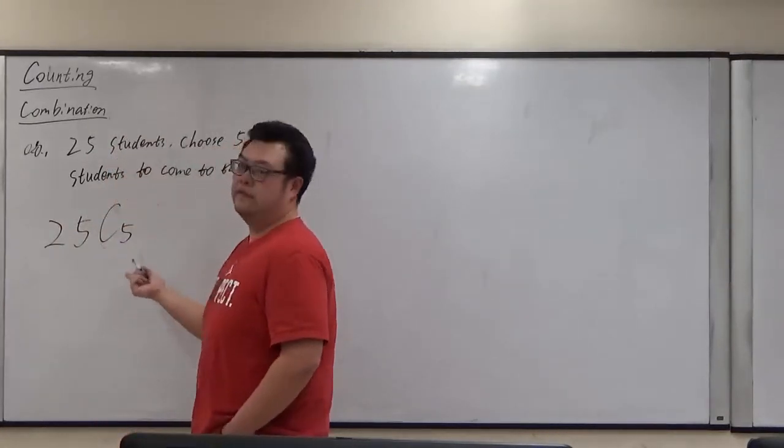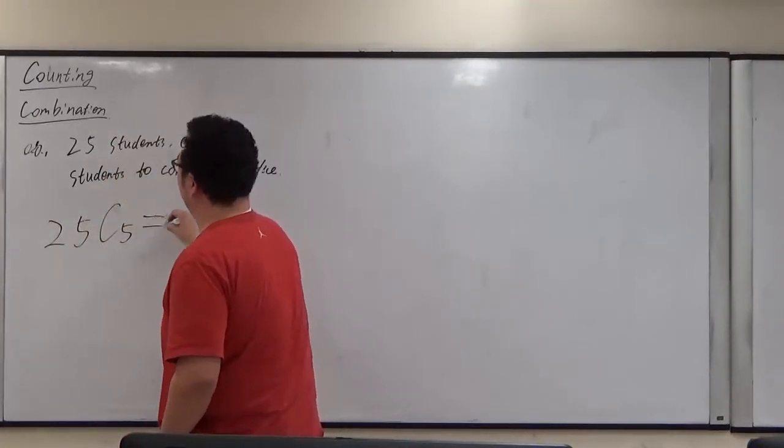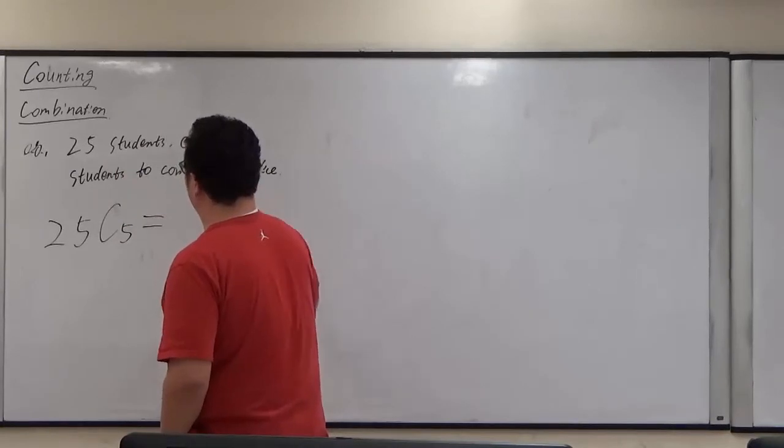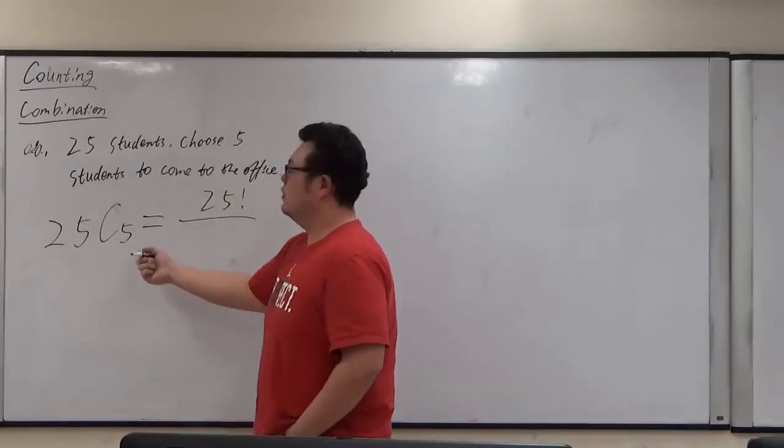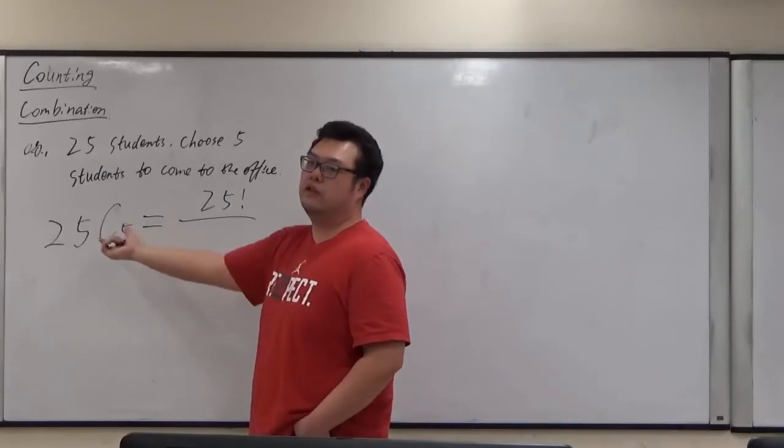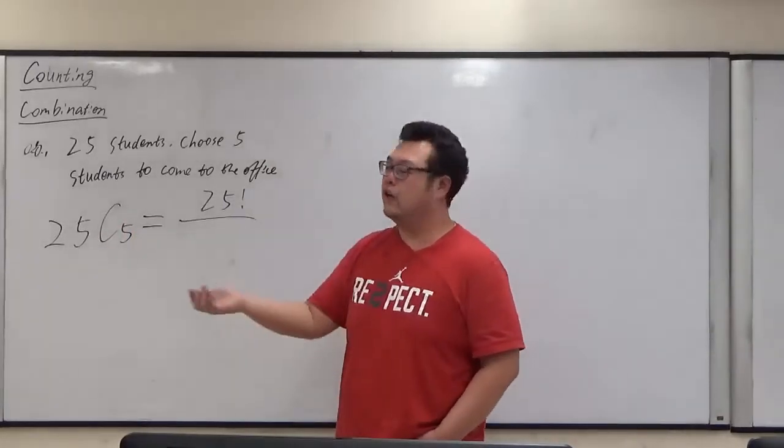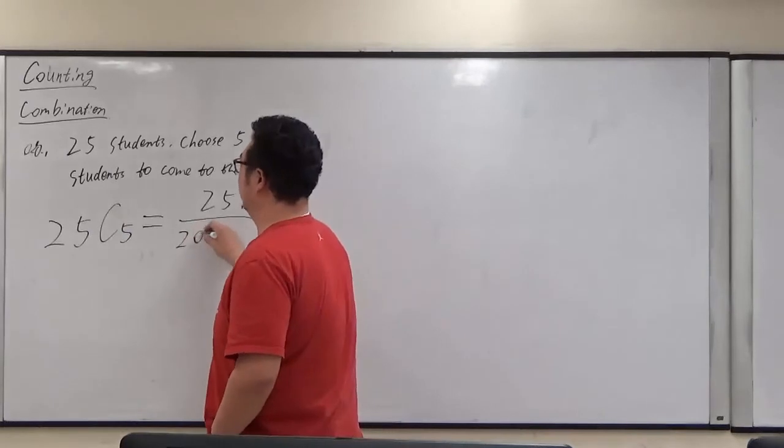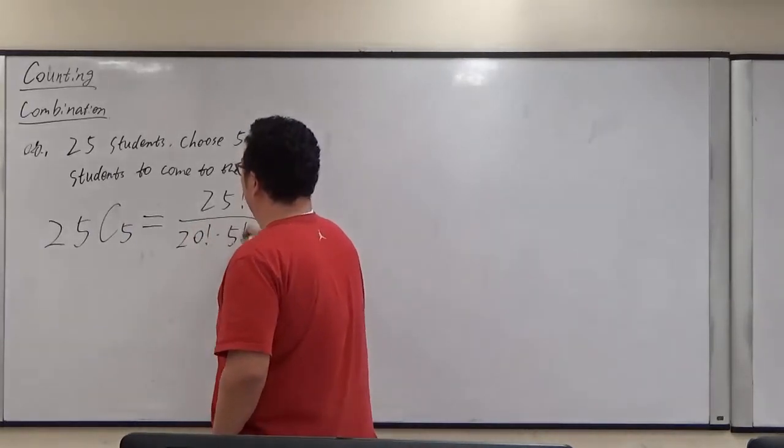So we are able to use the combination to do this. 25 just basically choose five of them. And we use the factorial. The five students we choose doesn't matter in order. Also, the remaining 20, I don't care at all how they are arranged in order.